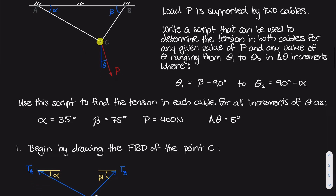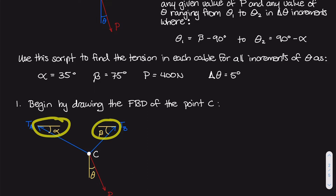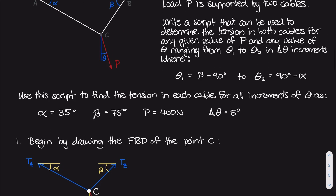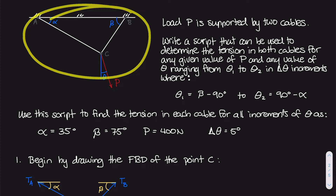If we look at point C, we have load P acting downwards, and the tension of cable B and tension of cable A. In the free body diagram, I've drawn the force vectors TB for tension of cable B and TA for tension of cable A, as well as our load vector P. I've also drawn in the angles that tension A and tension B make with the horizontal, which are the same angles alpha and beta from the main diagram.